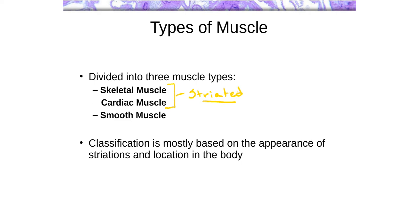Skeletal and cardiac muscles are striated because they have what are known as striations, due to the arrangement of myofilaments within these muscle fibers. We have myofilaments arranged into sarcomeres, with myosin and actin arranged in a particular way. Smooth muscle doesn't have a striated appearance — that's why it's called smooth — because the filaments are arranged differently and don't have that same sarcomere arrangement.